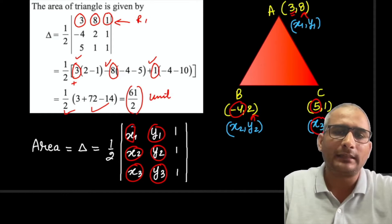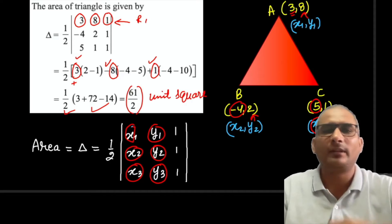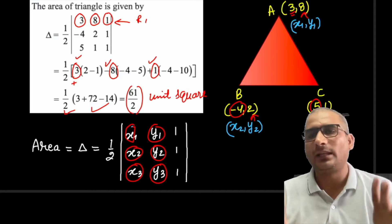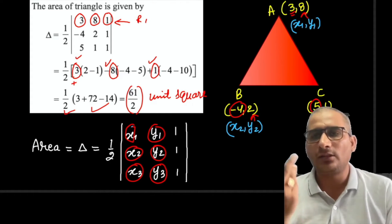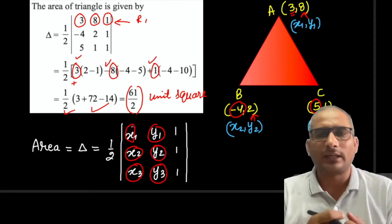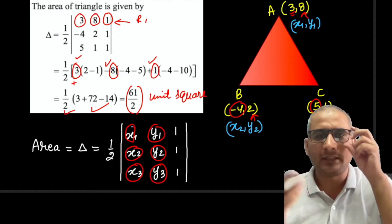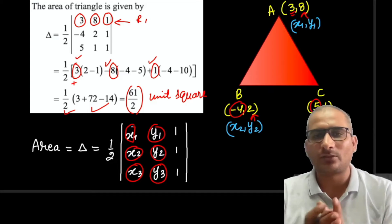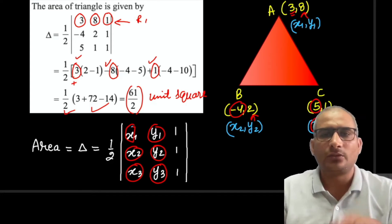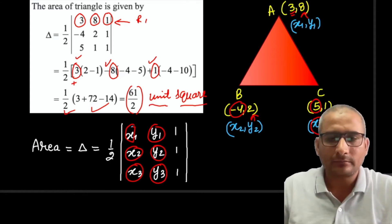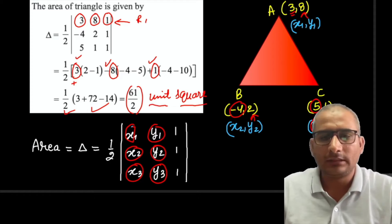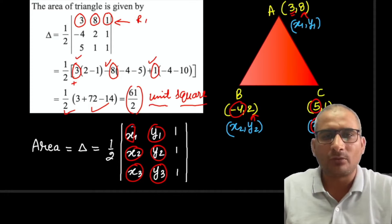So the area of the triangle is 61/2 unit squared. Whatever unit is given — meters, centimeters — the area unit is always the square of that unit. So we write it as unit squared. This is all about applying this formula.